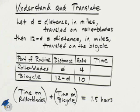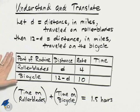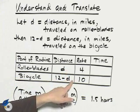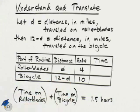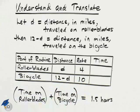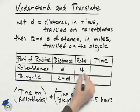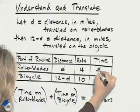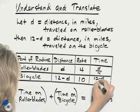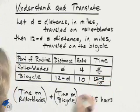I'll then organize my information in a table with the part of the routine. One part is rollerblades, the other is the bicycle. We've defined the distances D and 12 minus D. It was given that the rate on rollerblades was 4 and the rate on the bicycle was 10. The time can be found by taking distance divided by rate, so time will be D over 4 for the rollerblades and 12 minus D over 10 for the bicycle.